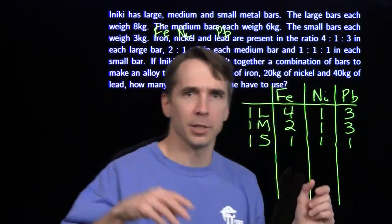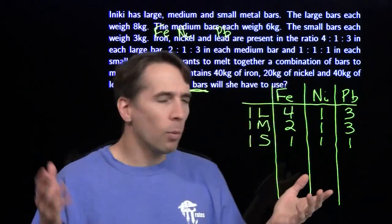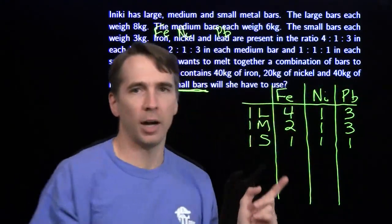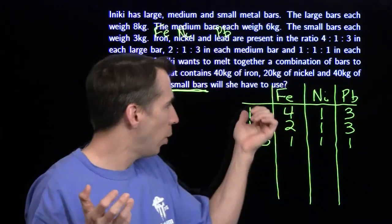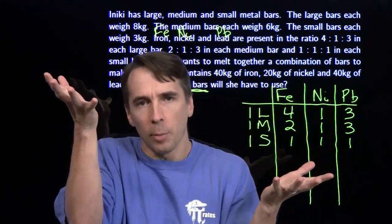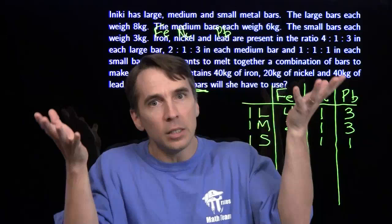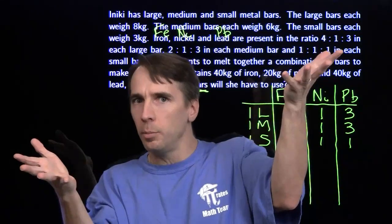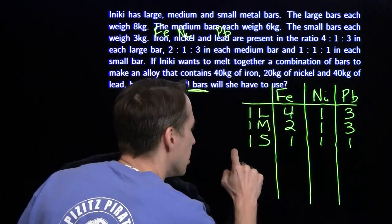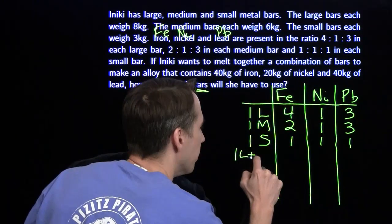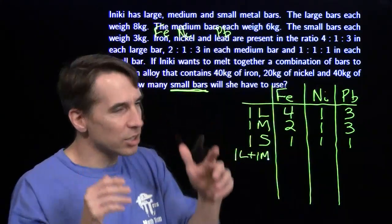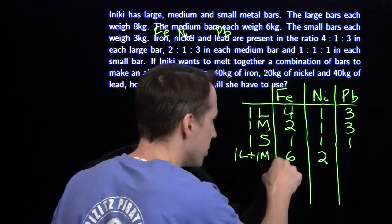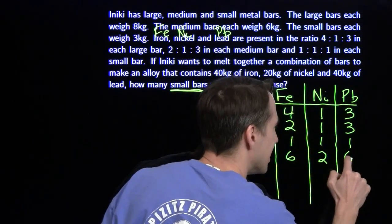Imagine we throw in a large bar in the mix. She's going to add one kilogram more of iron than of lead. But at the end we have to have the same amount of iron and lead, so if she throws in one of these large bars that has one more kilogram of iron than lead, she's going to have to balance it with one medium bar, which has one more kilogram of lead than iron. For every large bar she puts in, she has to throw in one medium bar. I'm going to combine these: one large and one medium together, which gives us 6 iron, 2 nickel, and 6 lead.